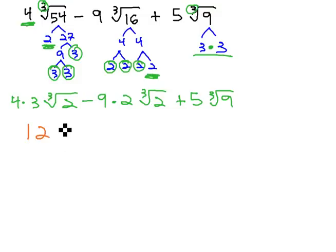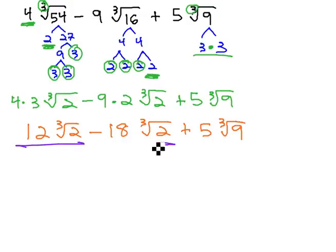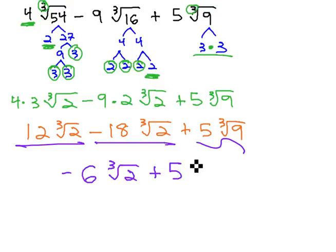Multiplying together, we have 12 times the cube root of 2, minus 18 times the cube root of 2, plus 5 times the cube root of 9. Combining our like radicals, cube roots of 2 are like radicals. 12 minus 18 is negative 6, cube root of 2, and we still have the plus 5, cube root of 9.